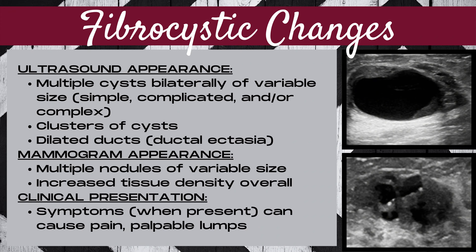The ultrasound appearance of fibrocystic changes has wide variability, but generally you will see multiple bilateral cysts of variable size. These cysts can be simple, complicated, or complex, or any mixture of those three. You may see clusters of cysts and often dilated ducts, known as ductal ectasia. The mammogram appearance is multiple nodules of variable size and increased tissue density throughout the breast. Clinically, when symptoms are present, the patient will most commonly have pain and one or more palpable lumps throughout the breast tissue.